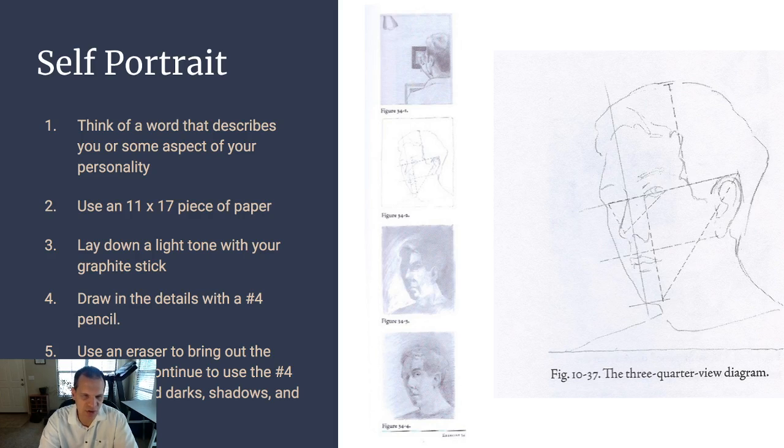You'll do a light shading, light to medium shading with the graphite stick. Then you'll draw in the details with the number 4 pencil, as well as erase, picking up the blocks of light areas and that kind of thing. It should be really fun.